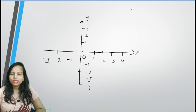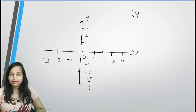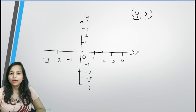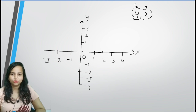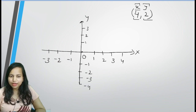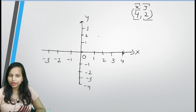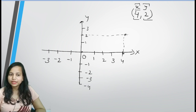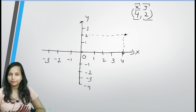Agar maine aapko bola ki you need to locate the object whose coordinates are (4, 2) — toh aapko draw karna hai ki woh object ki position kahan par hai. X-axis ka coordinate 4 hai, toh x-axis par 4 yahan par — and y ki value 2 hai, toh yeh raha y ka 2. Yeh kahan par intersect karenge — yahan par. Toh humaara object is position par hai. Aur yeh kaunsa quadrant hai? This is the first quadrant.